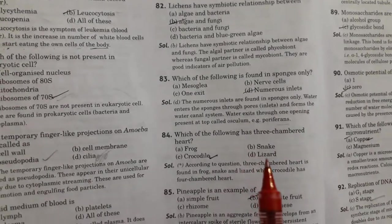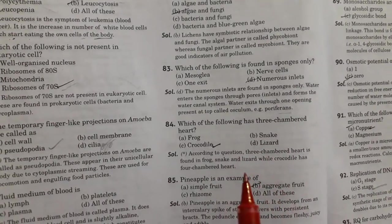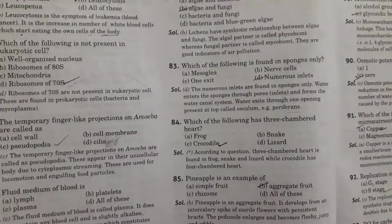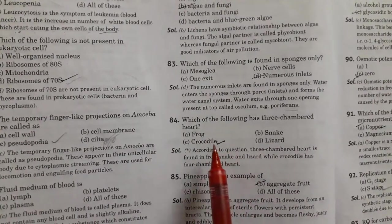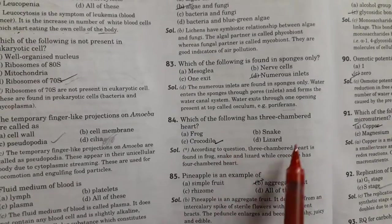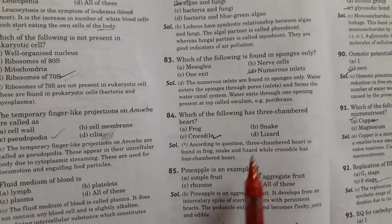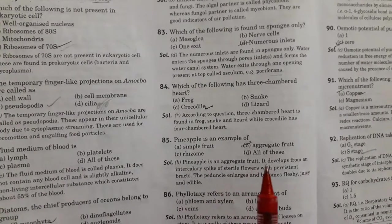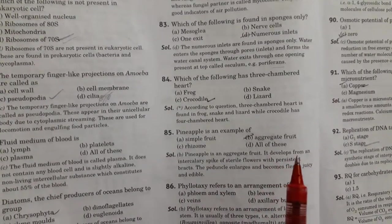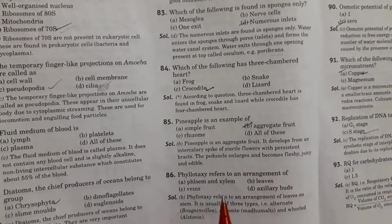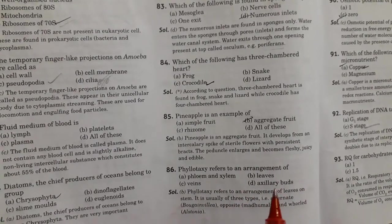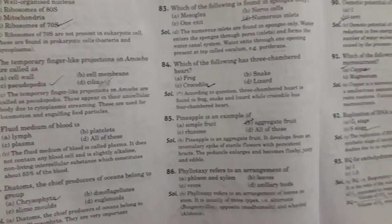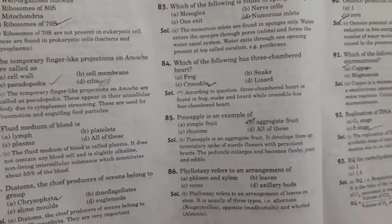Next is which of the following has three-chambered heart. The crocodile has four-chambered heart. And the frog, snake and lizard have three-chambered heart. So this question is a little wrong. Next is pineapple is an example of aggregate fruit. Then next is phyllotaxy refers to an arrangement of leaves.